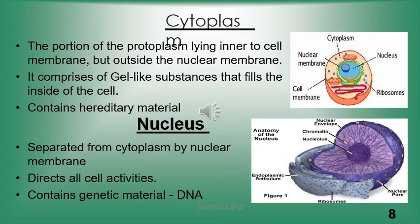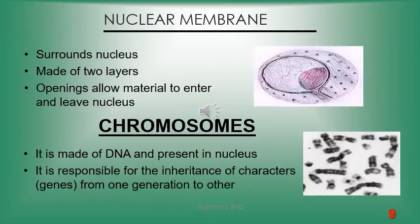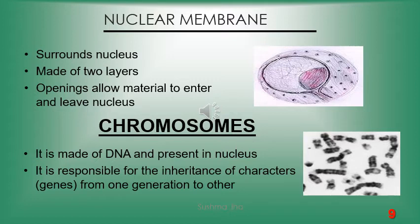The second is the nucleus — you can say the brain of the cell. It directs all the cell activities. It also contains genetic material like DNA or RNA, and is separated from the cytoplasm by the nuclear membrane. The nuclear membrane is a two-layer membrane surrounding the whole nucleus, with small openings called nucleopores that allow material to enter and exit. Chromosomes are thread-like structures inside the nucleus, made up of DNA, responsible for inheritance of characters from one generation to the other.